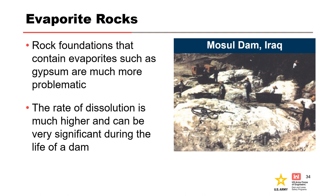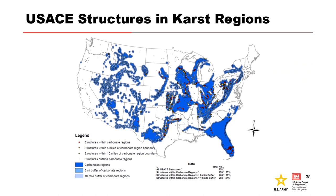Rock foundations that consist of evaporite rocks, like gypsum, are potentially more problematic than limestone simply due to the rate of dissolution. Mosul Dam in Iraq is a good example where grouting has been ongoing since the dam's completion to treat the continuous deterioration of the foundation. Here's a map of USACE structures located within karst regions — 25 percent of USACE structures are mapped in carbonate regions.